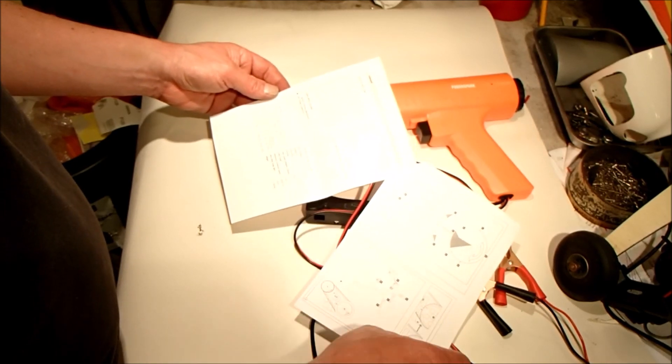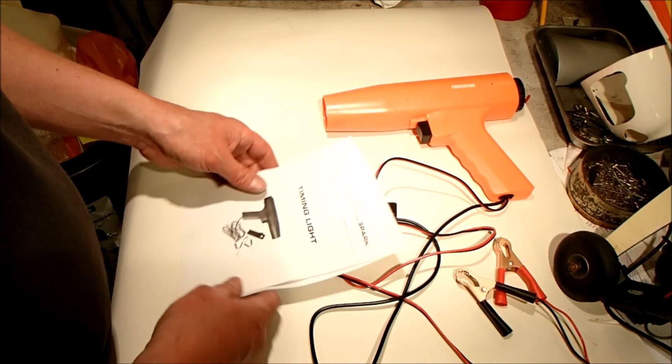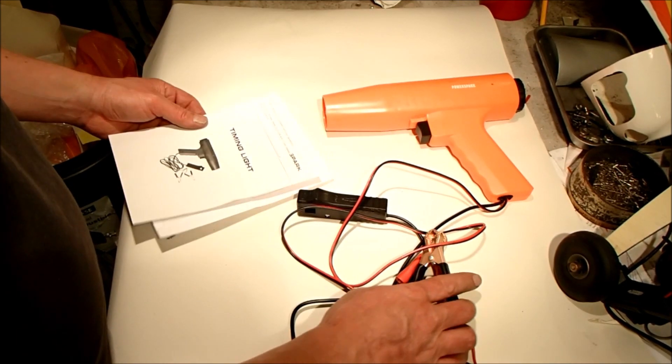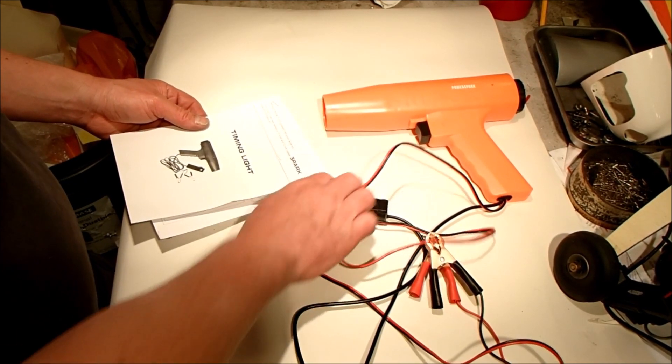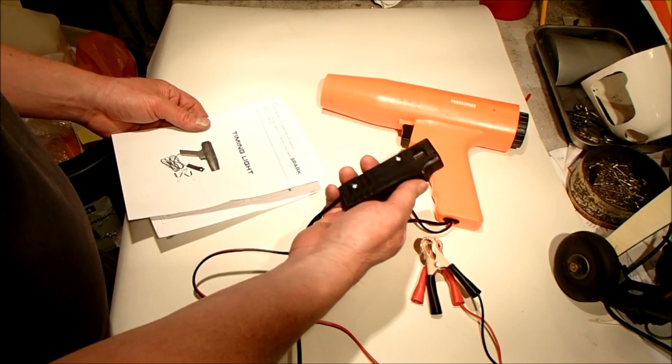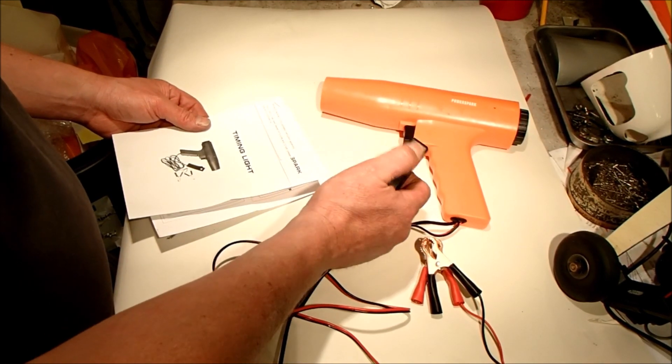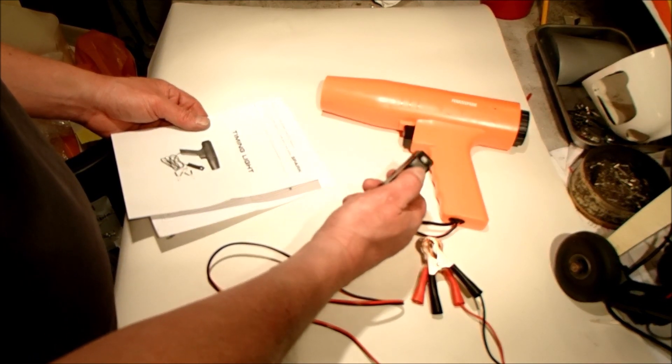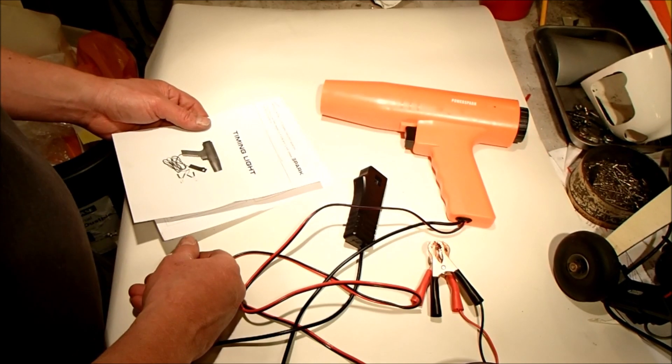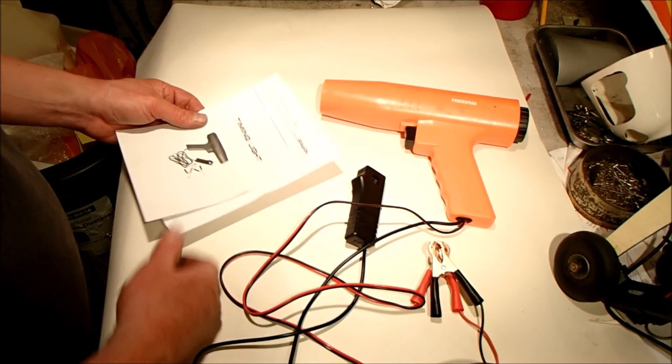It even has some pictorials just to show you how to set up. It's very simple: connect up to your power supply off the battery, connect to the number one spark plug lead. It even has an arrow showing which way it should be facing in relation to the spark plug, and then press the trigger and off it goes.